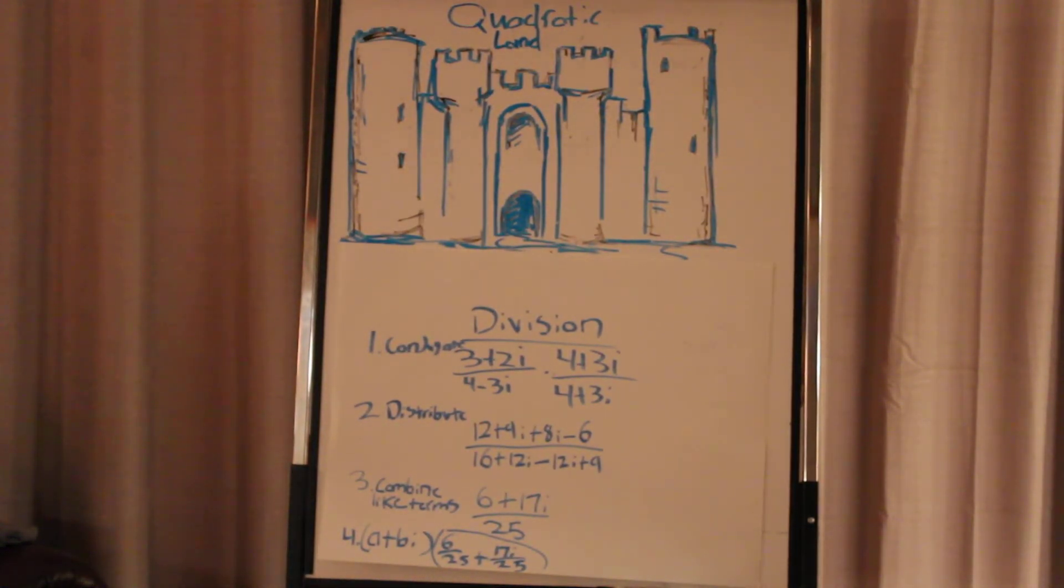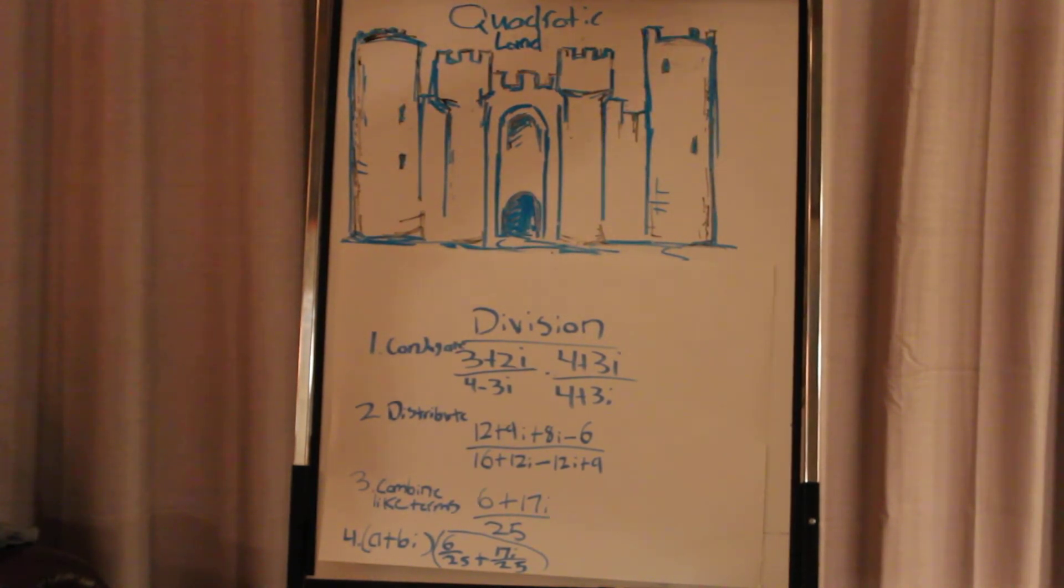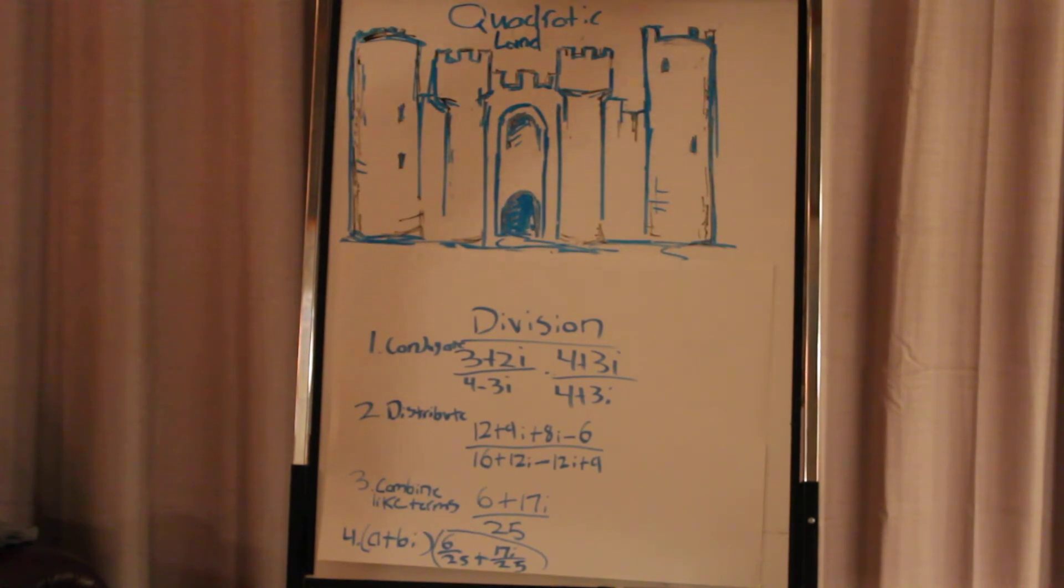This is probably when it gets most complex. I guess that could be a pun. Okay. All right. So, moving on to division now. Let me address the equation. The equation being 3 plus 2i divided by 4 minus 3i. Now, you might be wondering why I'm multiplying next to it 4 plus 3i divided by 4 plus 3i. And that's basically the conjugate of the denominator.